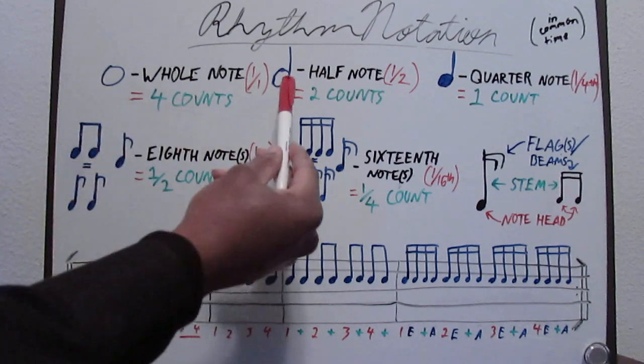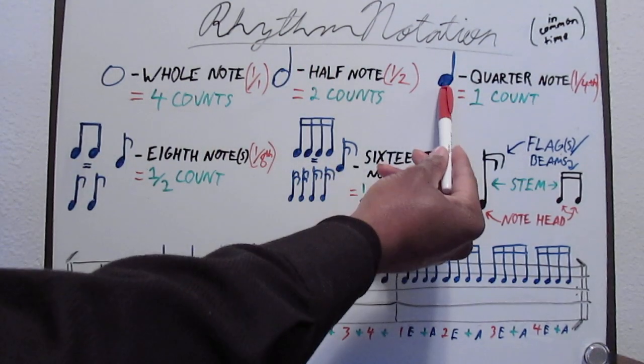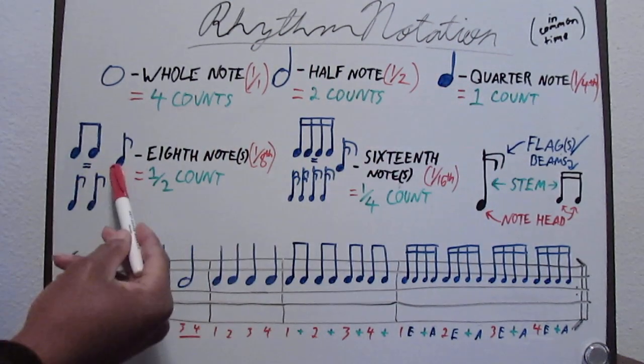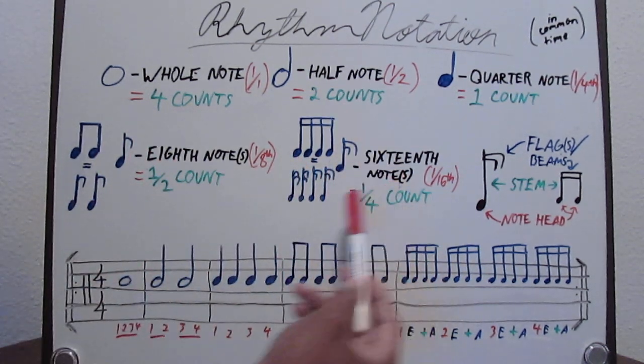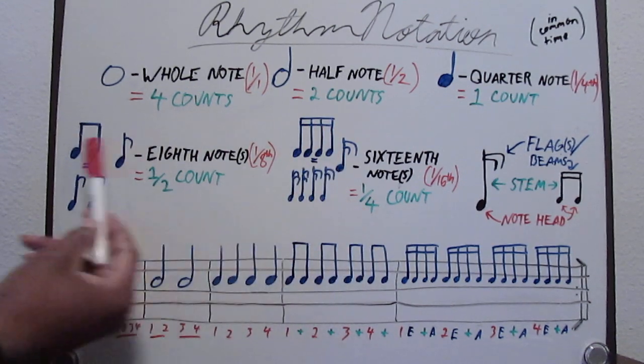So the note head is open here, then we add a stem, then we fill in the note head with the stem, then we add a flag. One flag for the eighth note, two for the sixteenth note. But if we want to connect them, we make them beams.